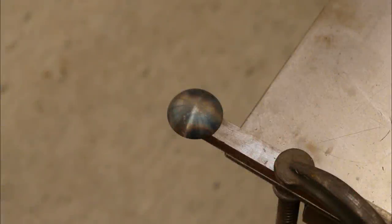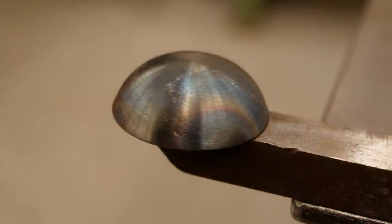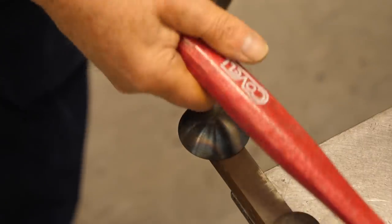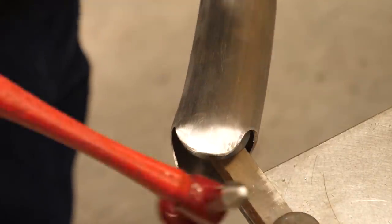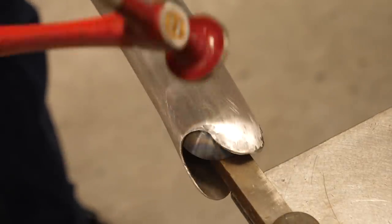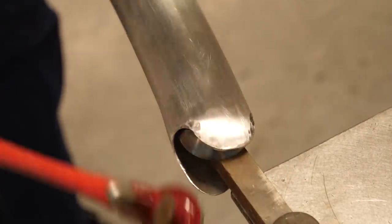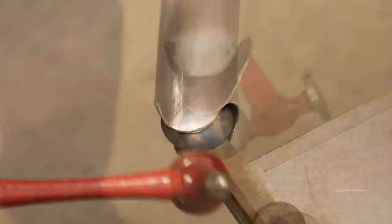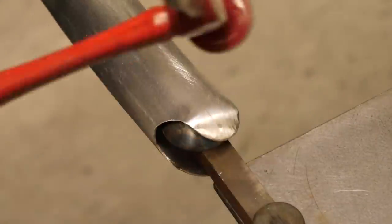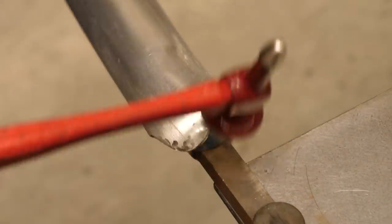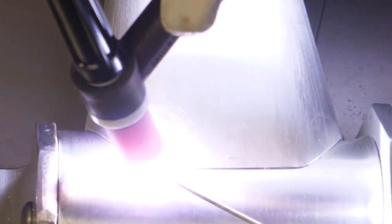I made a special dolly to fit inside the tube. This eases the process of rounding the end of the tube where it fits against the head tube. Now I can tack all the components together on the fixture.